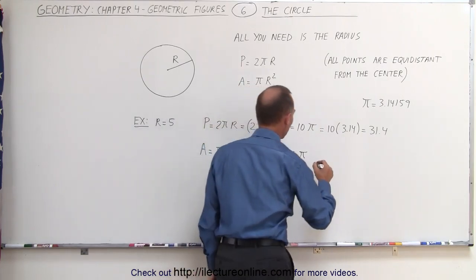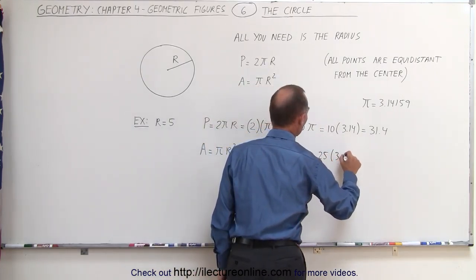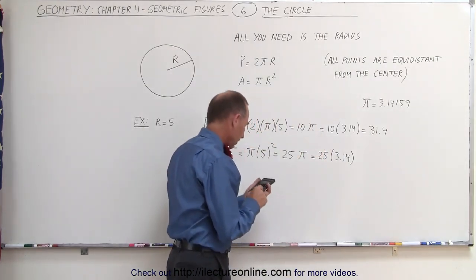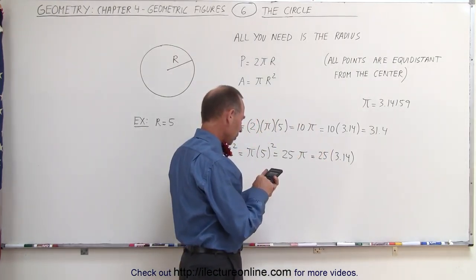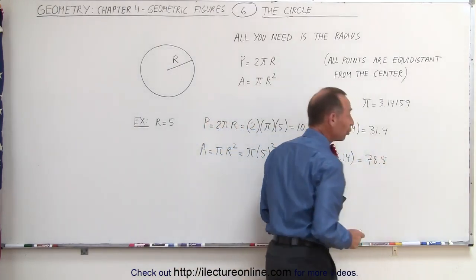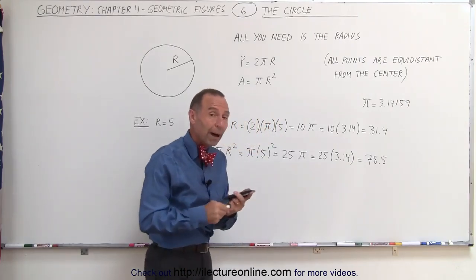Again, if we use the approximation that π is about 3.14, then by the calculator we can find out what that's equal to. 3.14 times 25 equals 78.5. Or what you could do is you could simply use π,